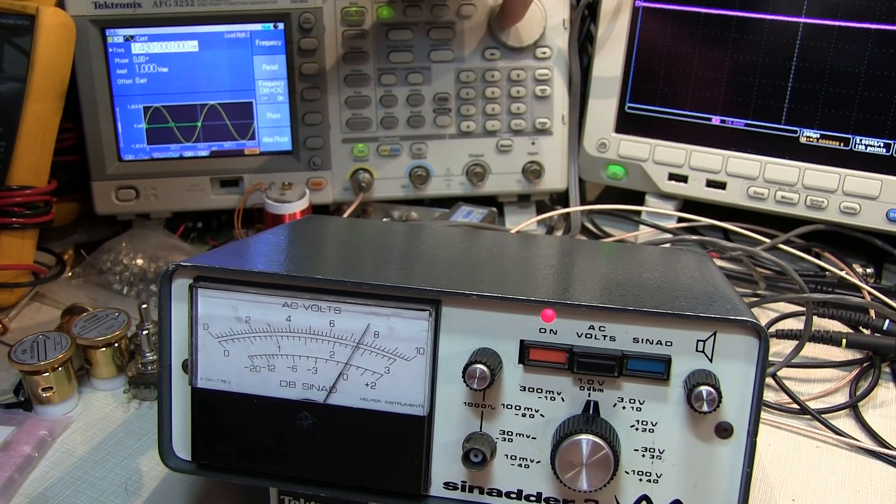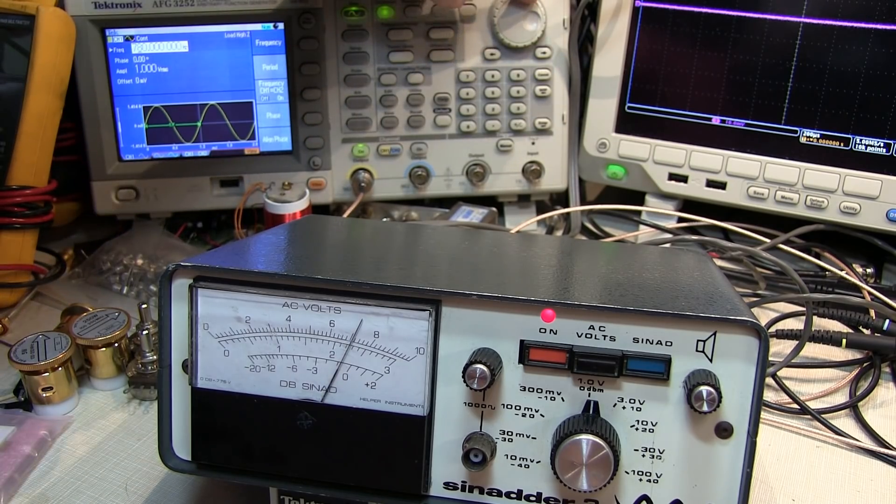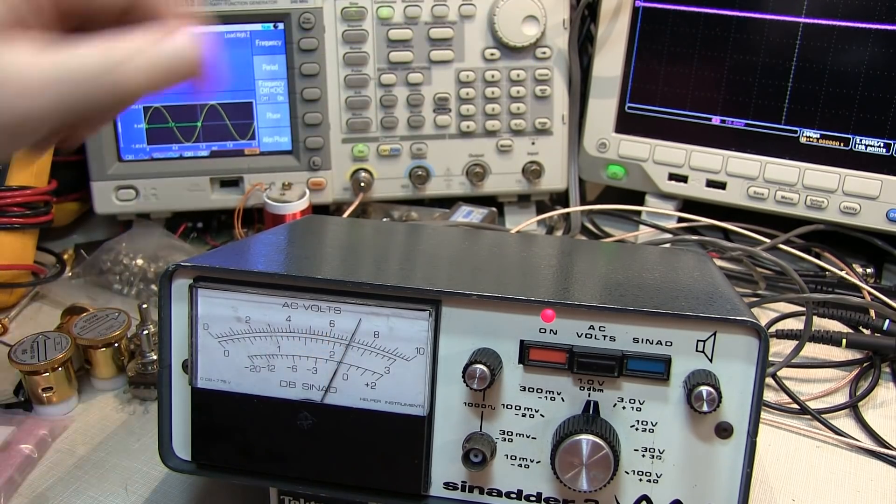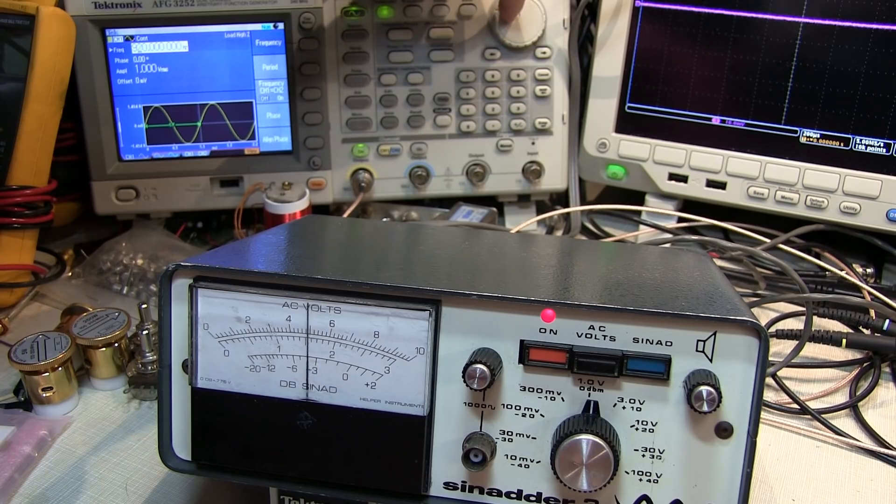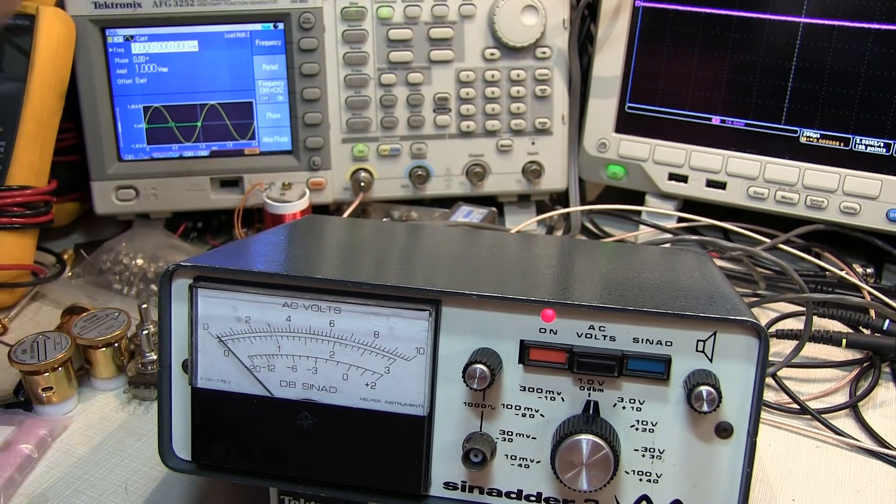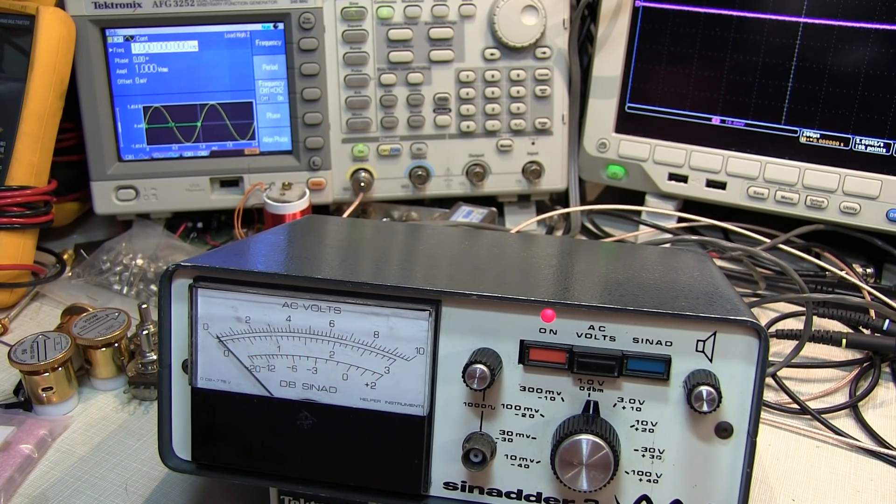So the signal on either side of that notch filter is the same. And if I go the other way and come back down through 1kHz and then back down the other side, now I'm looking at something about 800Hz and that's pretty darn close to that full amplitude as well.